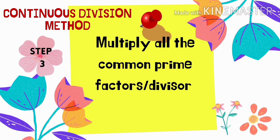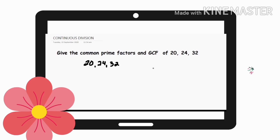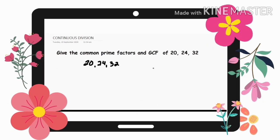So let's apply these steps to these examples. Let's give the common prime factors and GCF of 20, 24, and 32 using continuous division.